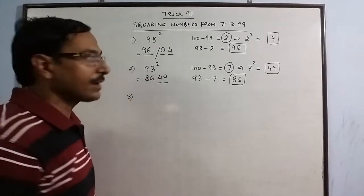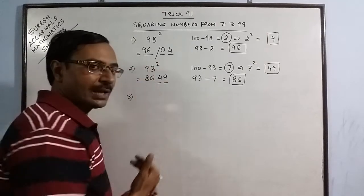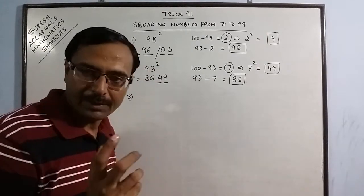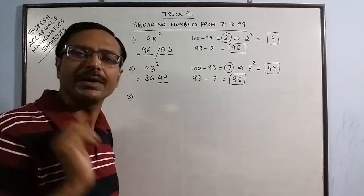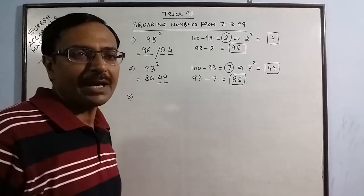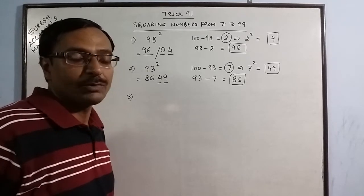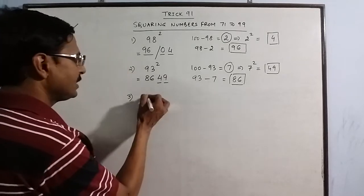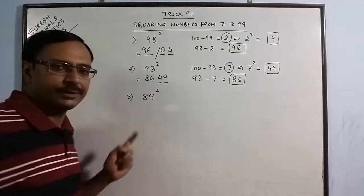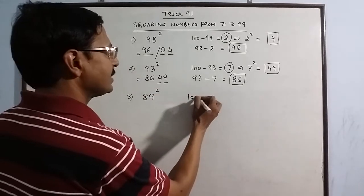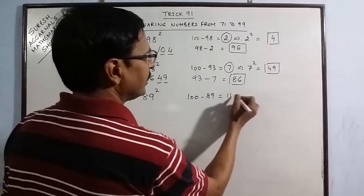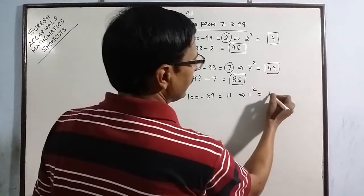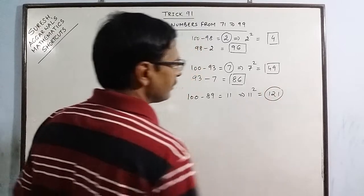As you move far away from 100, the amount of calculation becomes little bit tough. Not that much tough that you have to spend a lot of time but see 89 square. Now 100 minus 89 is 11 and 11 square gives you 121. Now remember this is a 3 digit number.